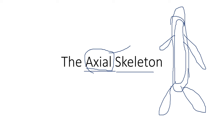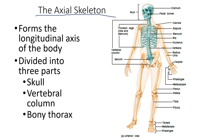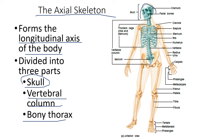The axial skeleton is composed of the skull and the vertebrae. It forms the longitudinal axis of the body and is divided into three parts: skull, vertebral column, and the bony thorax. We have the skull here, the bony thorax — which is the chest — and the vertebral column. These are the three major divisions of the axial skeleton.